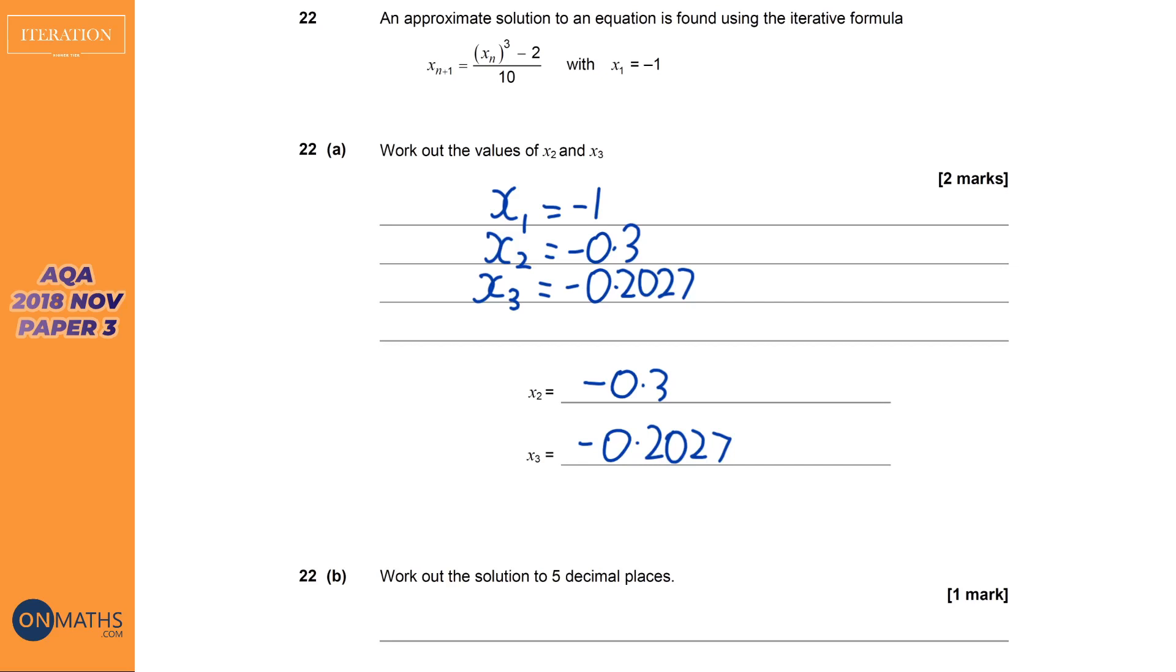Now, we need to talk about strategy with this, and I'm going to show you a much better way of doing this question. So what you're going to do is you're going to type in minus 1 in your calculator, that's all you type in, then press equals. What that will do is that will store minus 1 as an answer on the calculator. Then what you're going to do is press the fraction button, and you're going to put in brackets, answer, and then close the brackets, and then cubed, and then take away 2, over 10.